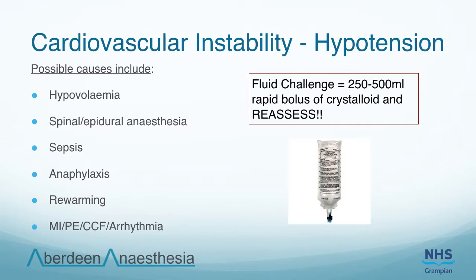Hypotension is relatively common in the recovery room. It is often transient and benign, related to the residual effects of anaesthetic and analgesic drugs. With severe, ongoing or recurrent hypotension, however, it is extremely important to assess the patient to elucidate the underlying cause. Hypovolemia is an important cause to consider, which may be due to inadequate perioperative fluid replacement or due to ongoing losses, for example from surgical drains or ongoing bleeding. The patient should be laid flat or slightly head down and given supplemental oxygen. Signs of hypovolemia include tachycardia, cool peripheries, prolonged capillary refill, decreased conscious level and decreased urine output.